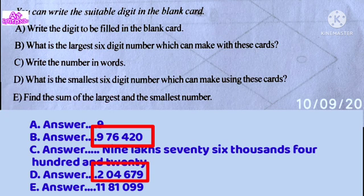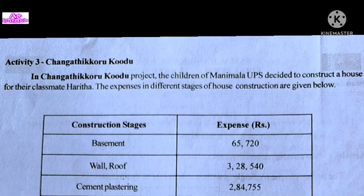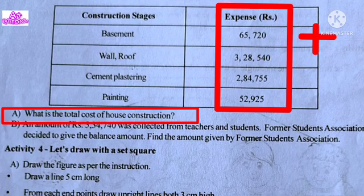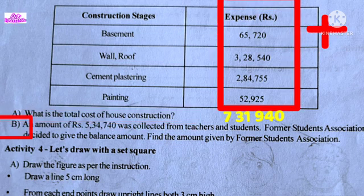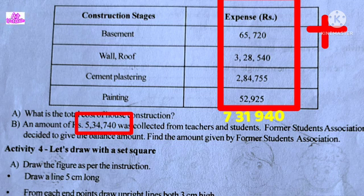This number is another 4-digit number which can also be taken. Students were collected 34,640 rupees. The Former Students Association decided to give the balance amount.